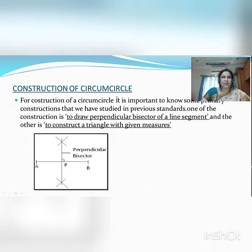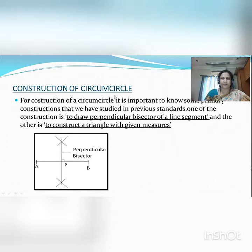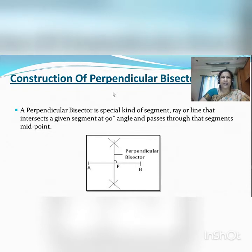Construction of a circumcircle is the main topic today. For construction of a circumcircle, it is important to know some primary constructions that we have studied in previous standards. One of the constructions is to draw the perpendicular bisector of a line segment, and the other is to construct a triangle with given measures. Let us first go to construction of a perpendicular bisector. A perpendicular bisector is a special type of segment which divides that segment into exactly two congruent parts and is perpendicular to that segment.